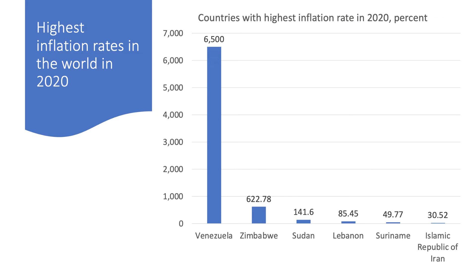As of 2020, these were the countries in the world with the highest inflation rates. Venezuela stands out as a country suffering grievously from the impact of hyperinflation — 6,500% was the average inflation rate in Venezuela in 2020. Zimbabwe's inflation rate looks low in comparison, but it was well over 600%, with prices rising by double digits every single month. And in countries like Sudan, Lebanon, Suriname, and Iran, inflation is very high — in the case of Sudan, well over 100% inflation.